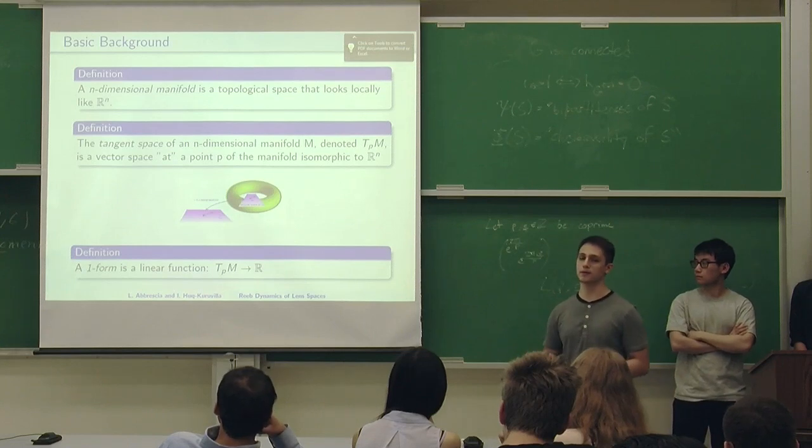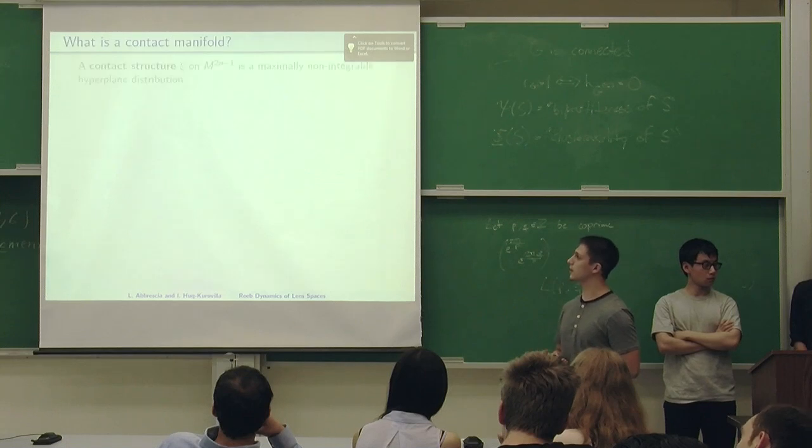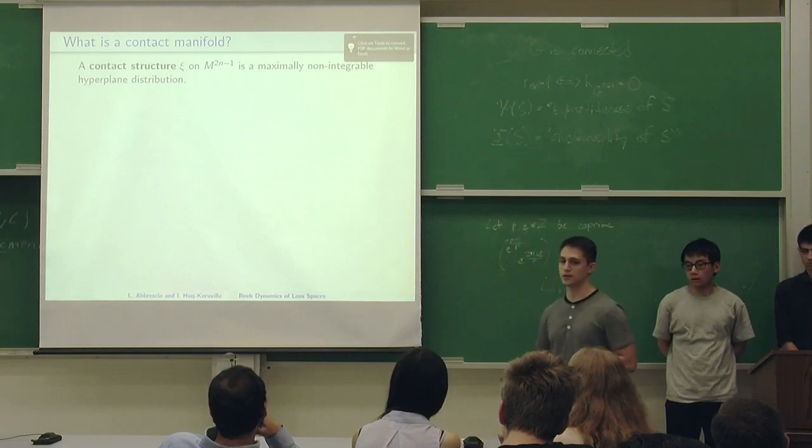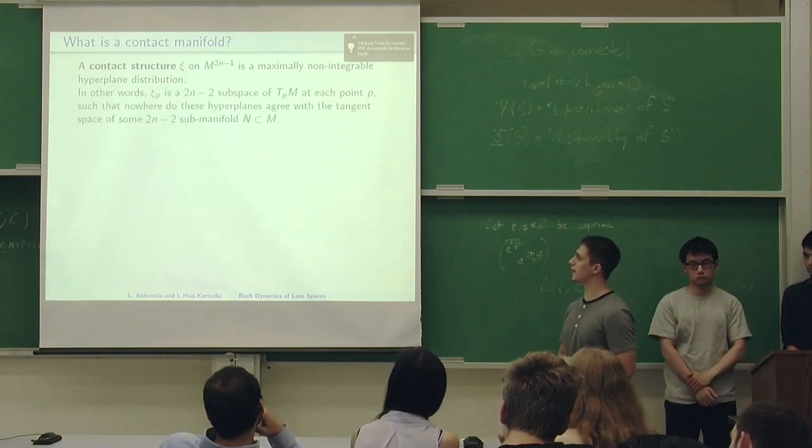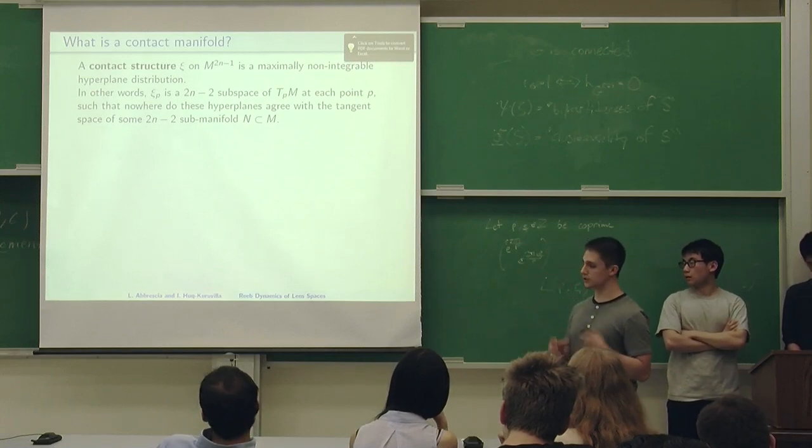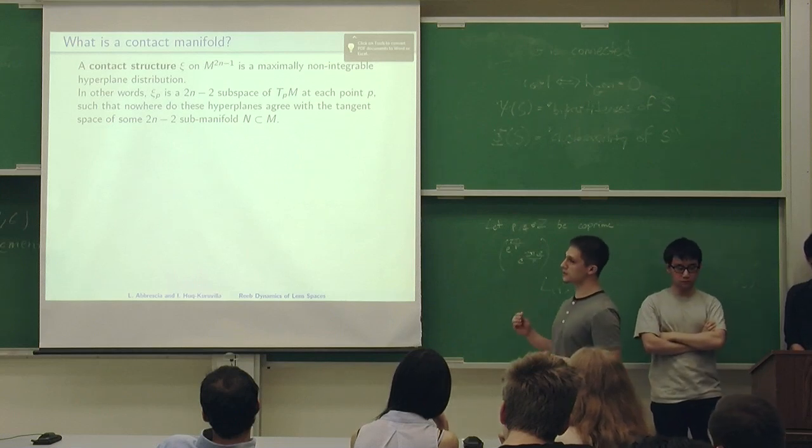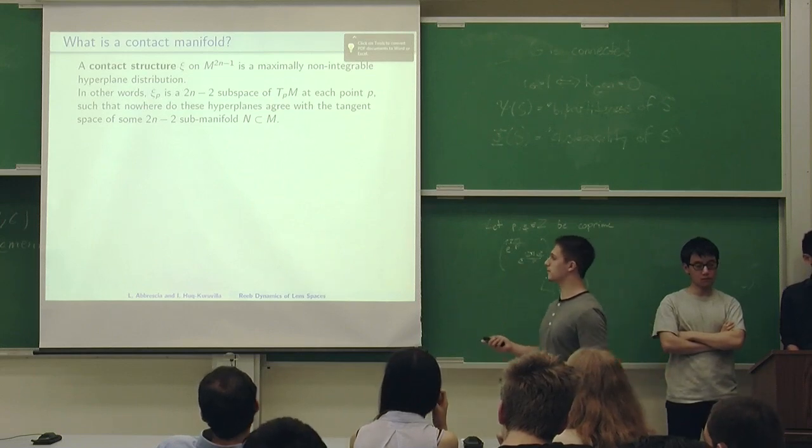Now that we have some basic background and know what a differentiable manifold is, we can talk about what a contact manifold is. A contact manifold is a differentiable manifold with a contact structure. A contact structure is a maximally non-integrable hyperplane distribution. Assuming you don't know what these words mean right off the bat, I'll explain them better now. What a contact distribution, what you should have in mind, is hyperplanes of each tangent space such that these hyperplanes do not make the tangent bundle of a smaller manifold.